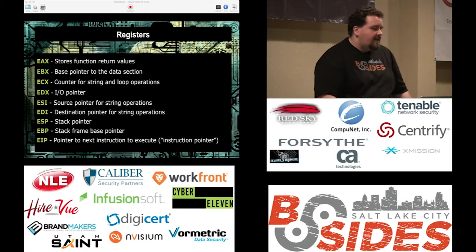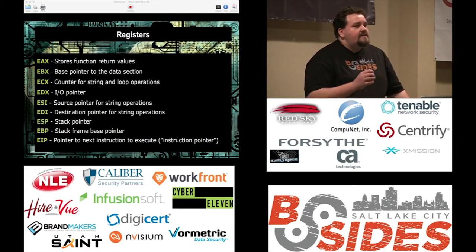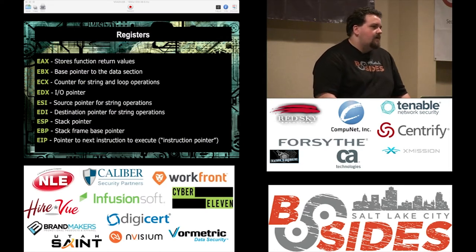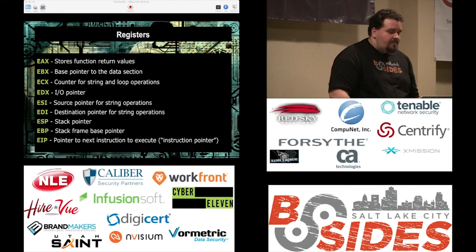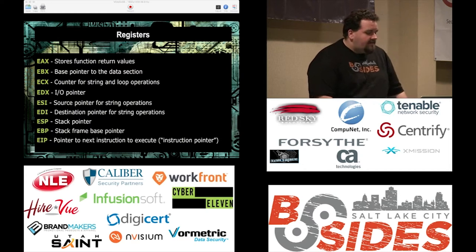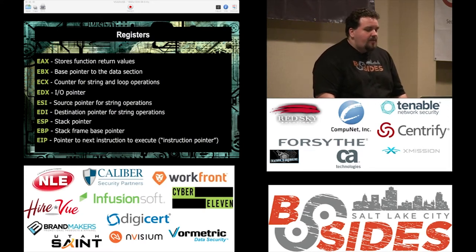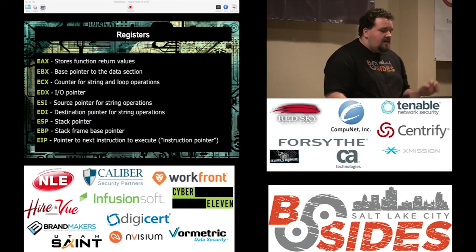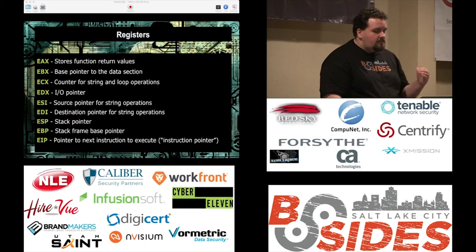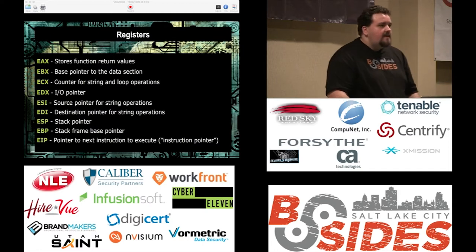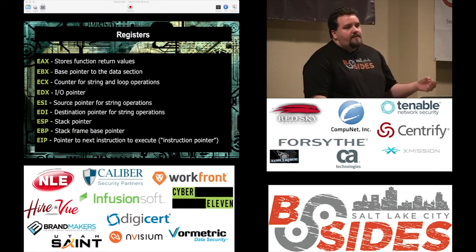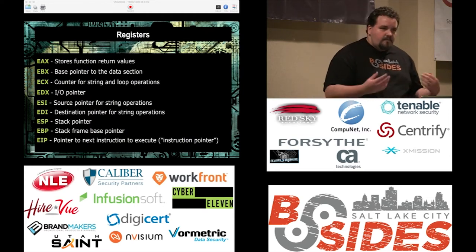EBX is the base pointer. ECX is used for counting and looping — these are just general conventions, nothing enforcing this. EDX is recommended for IO pointers. ESI for source pointer for string operations. EDI for destination pointer for string operations. ESP, EBP, and EIP are important because they deal with execution flow. ESP is the stack pointer — it points to the stack. EBP is the stack frame base pointer. EIP is the next instruction pointer, and that's a critical one — in buffer overflows, if you can get control of EIP, you can execute exploits.